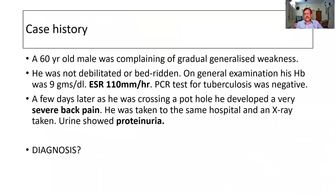I start with the case history. A 60-year-old male was complaining of generalized gradual weakness. He was not debilitated or bedridden. On examination, his hemoglobin was 9 and ESR 110 mm per hour. PCR test for tuberculosis turned out to be negative. A few days later, when he was crossing a pothole near his house, he developed an excruciating severe back pain. He was taken to the same hospital and an MRI was done. The urine showed proteinuria incidentally.